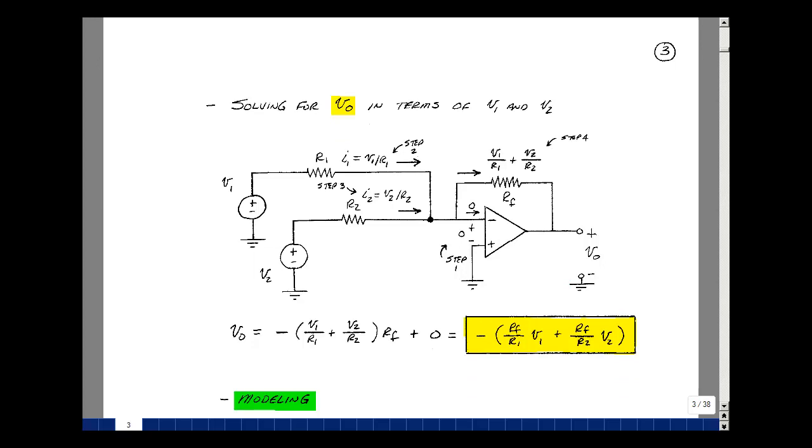I'll solve for Vout in terms of our input voltages V1 and V2. I have feedback around the op-amp, so the voltage across input terminals is driven to zero because of the high gain. The current is zero because the resistance is very high. If I apply voltage V1, a current flows. Likewise, V2, a current flows. I'll call that I1 and I2.